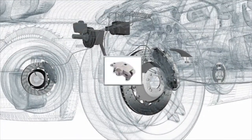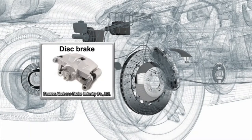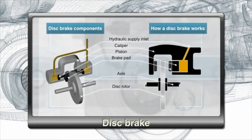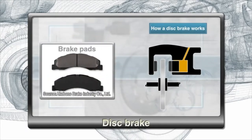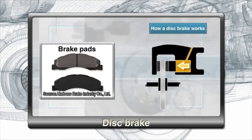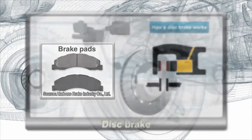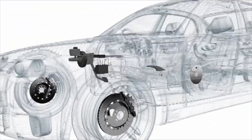As cars gain higher performance and speed, so does the demand for safe and effective brakes that can decelerate and stop the vehicle under any condition. With its efficient heat dissipation and stable performance, the disc brake has grown in popularity. In a disc brake, pistons press brake pads onto the rotor to create friction. These parts are housed in an assembly called the caliper. The rotor rotates with the axle; to stop the rotation, the pistons press the brake pads against both sides of the rotor, squeezing it to a stop.